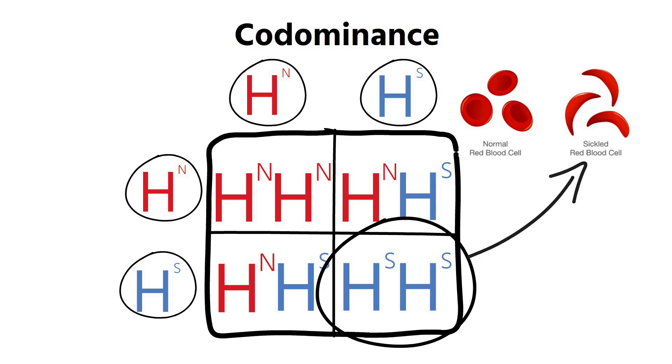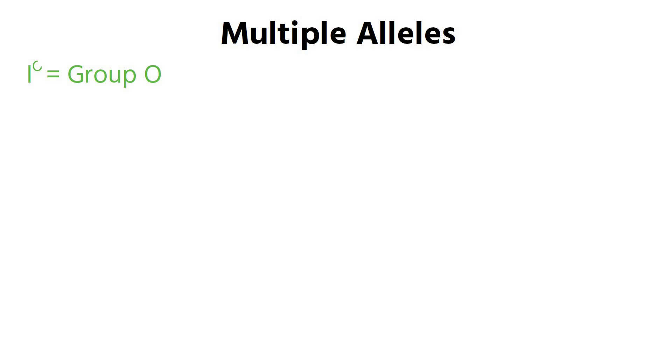You cross them as you would normally with a monohybrid diagram, but in this case you don't get a three to one phenotypic ratio — instead you get a one to two to one phenotypic ratio, because the heterozygous individuals express their own distinct phenotype rather than being dominated by one allele.